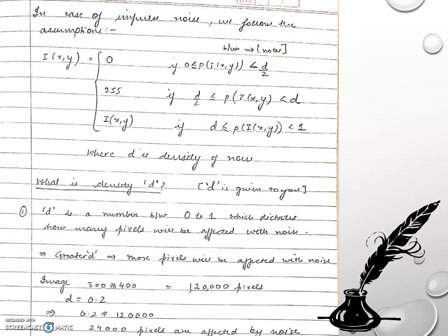This noise also appears when there is dust on a camera lens or faulty sensor regions. Interestingly, we may have experienced this noise without knowing it — when sharing images over the internet or WhatsApp, a few bits out of many megabytes may be corrupted. You'd only notice it if you zoomed into every part of the image. That's the beauty of this noise model. We've now completed all the noise models — thanks for watching and have a great day.